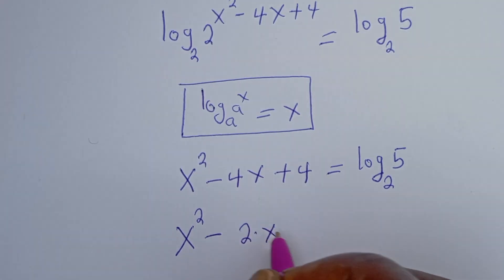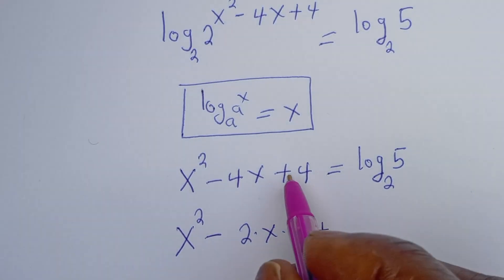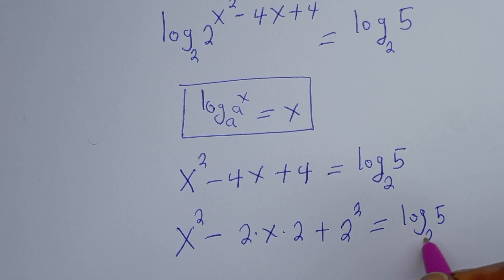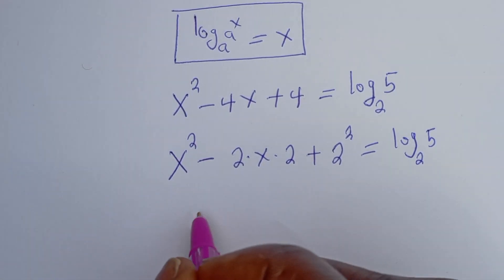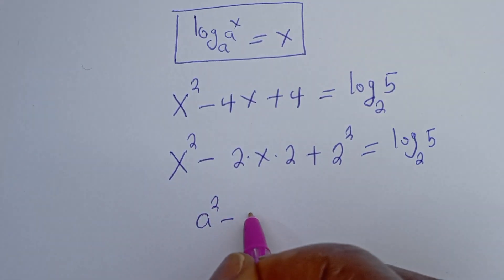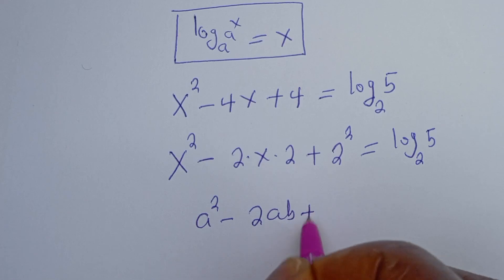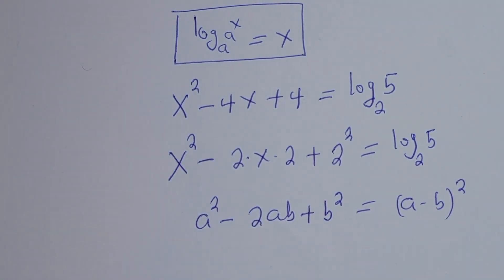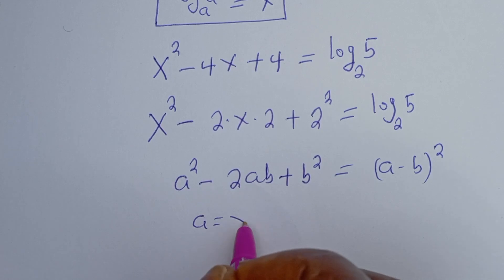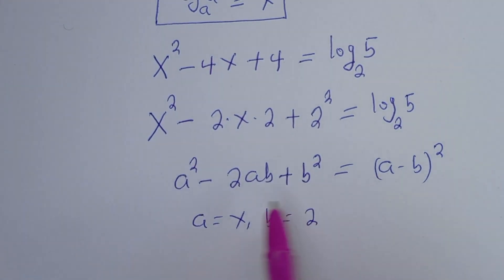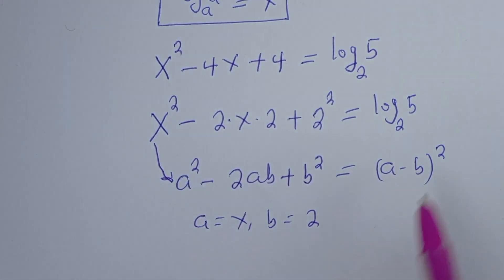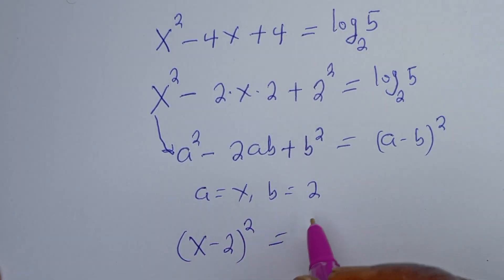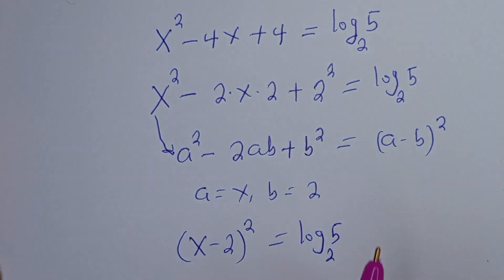This is equal to log 5 base 2. Now, s squared minus 4s plus 4 can be written as s squared minus 2 times s times 2, plus 2 squared. Take note that a squared minus 2ab plus b squared equals a minus b, all squared. Here, a equals s and b equals 2.